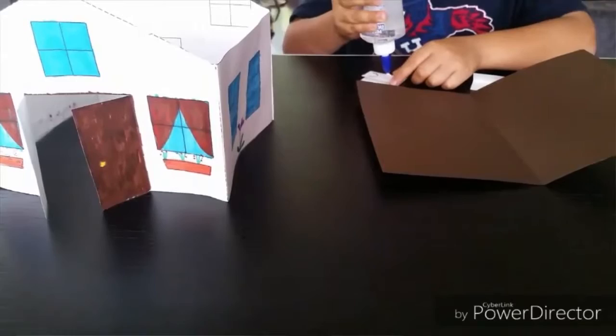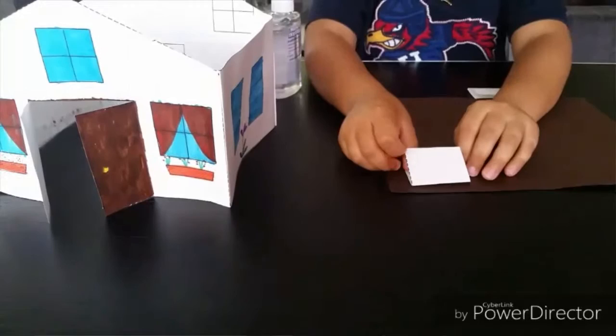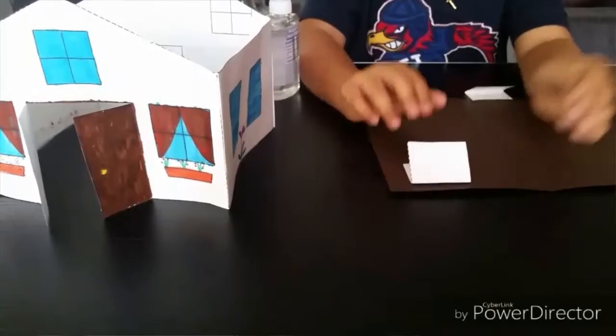Place the roof on the top of the house. If you would like to permanently attach the roof to the house, you can create four tabs. To do so, I demonstrate this.